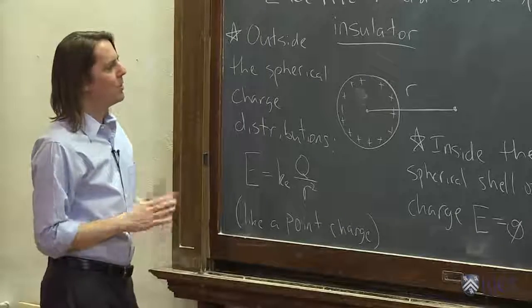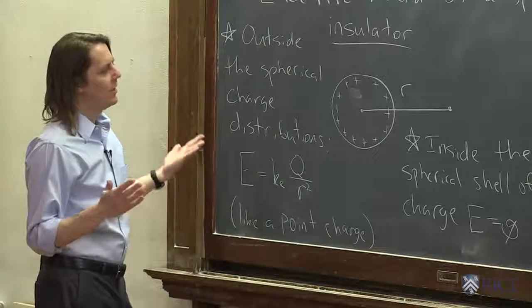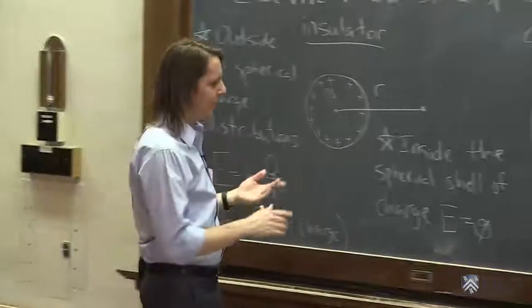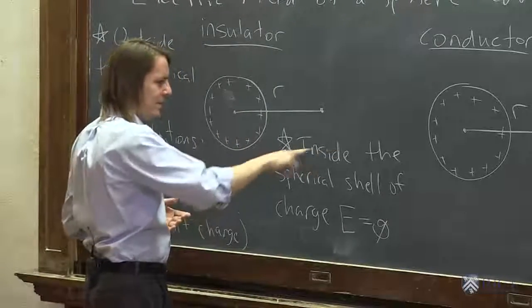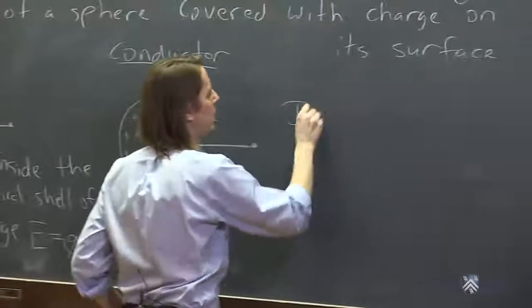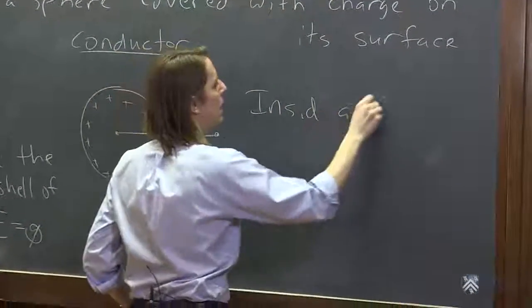What really, though, becomes then the question you could ask is, why did I specify the difference between the insulator and the conductor? What's the difference? Here's the difference. This is inside the spherical shell of charge, E equals zero. Inside a conductor, E equals zero always.